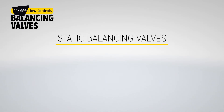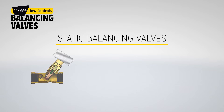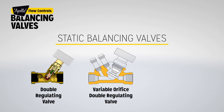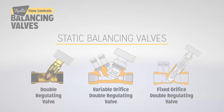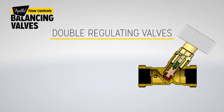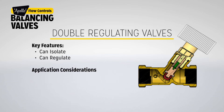The three main types of static balancing valves can be identified by different design styles: the double regulating valve, the variable orifice double regulating valve, and the fixed orifice double regulating valve. Double regulating valve key features: it can isolate and can regulate. Application consideration: the valve cannot measure flow.